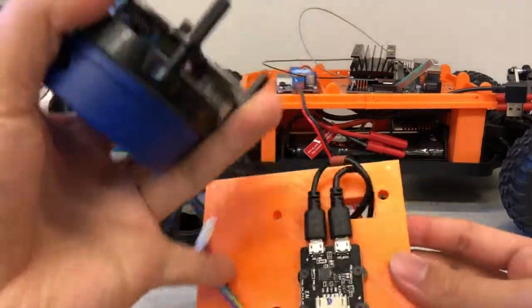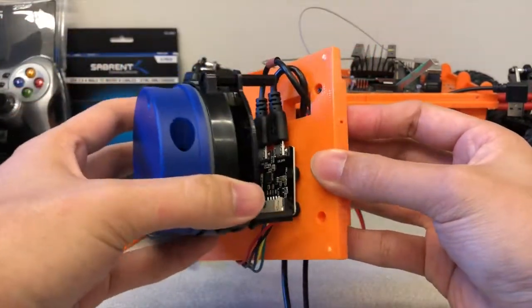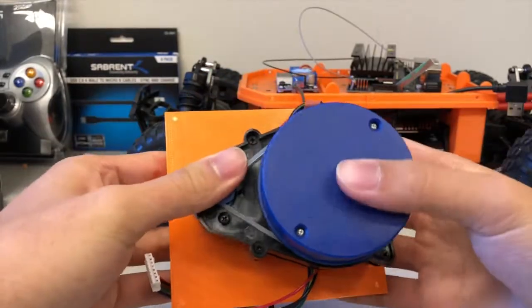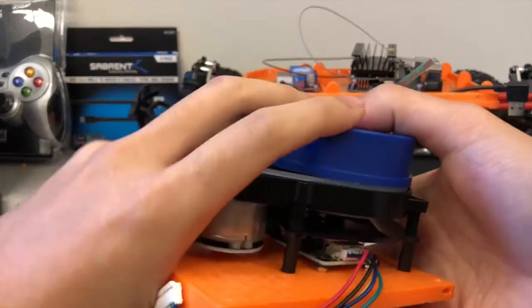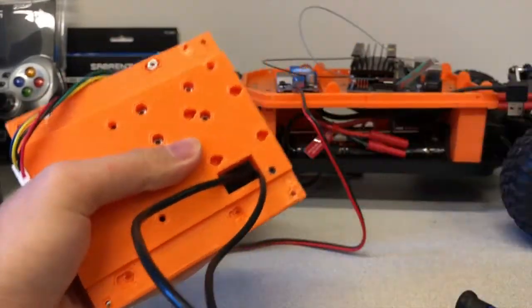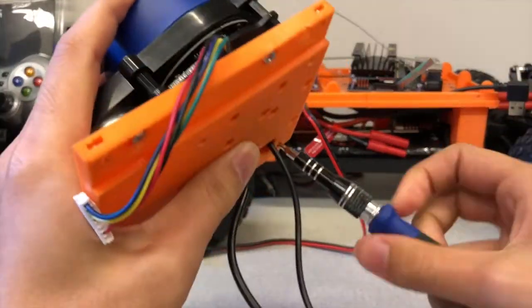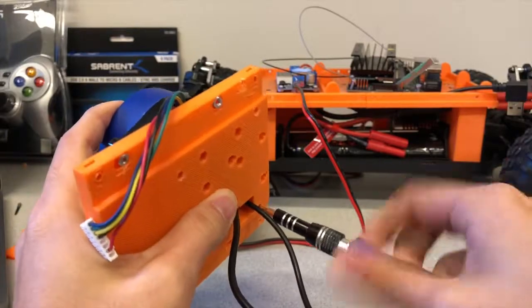Insert the legs of the YD LiDAR into the holes on top of the back cover. Secure them in place by inserting the 4 screws into the corresponding holes at the bottom of the back cover top. Use the 4 screws that came with the YD LiDAR.